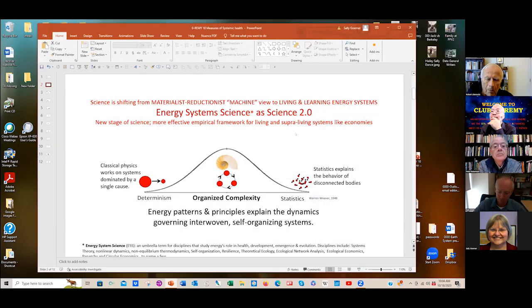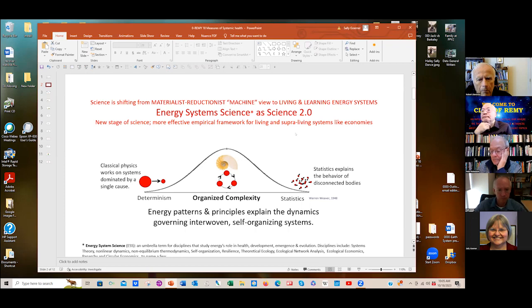I see energy system science as a more effective empirical framework for living and super living systems like economies. I'm using energy systems science as this umbrella term for all sorts of disciplines that study energy and forces and flows role in health, development, emergence, and evolution. Obviously systems theory was all about universal patterns, and basically I see energy systems as providing the basic explanations for why those exist. The morphodynamics, non-linear dynamics, or geometries of behavior, non-equilibrium thermodynamics is the broader story of how energy processes and pressures give rise to organized systems. There's a whole bunch of different disciplines that are using variations on that.